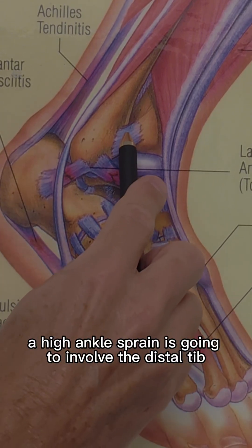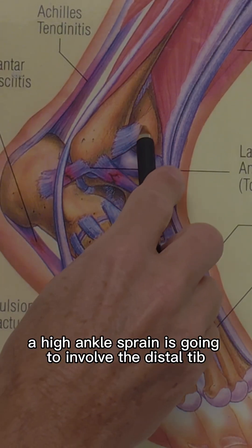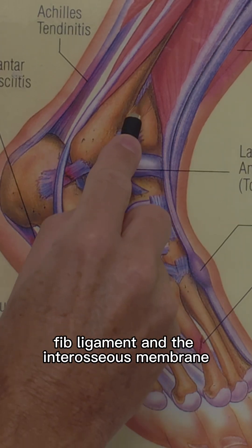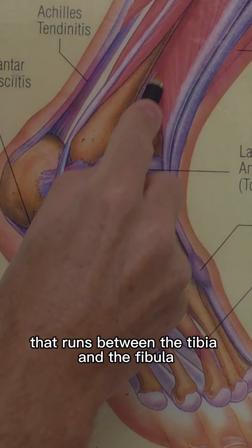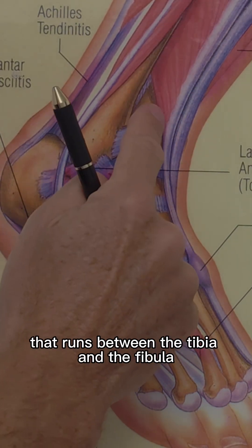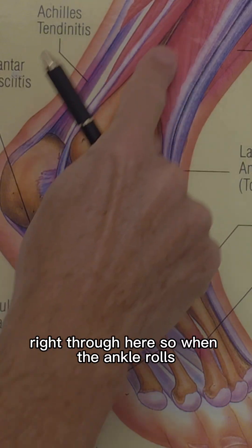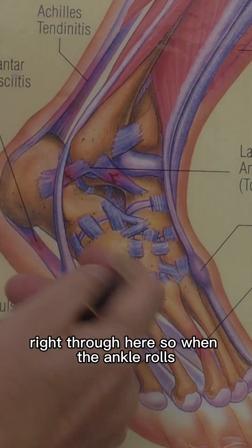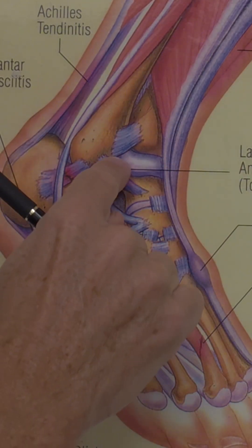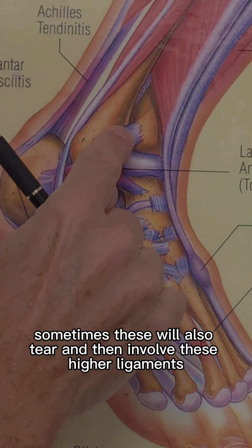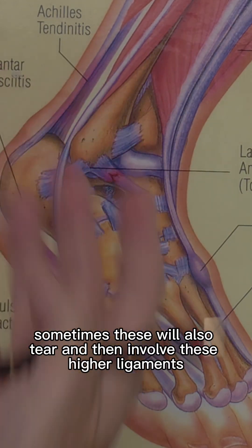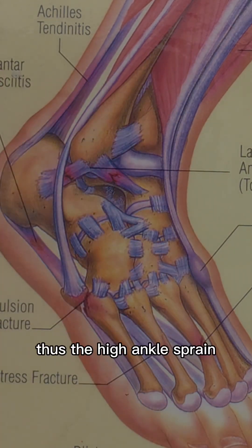A high ankle sprain is going to involve the distal tib-fib ligament and the interosseous membrane that runs between the tibia and the fibula right through here. So when the ankle rolls, sometimes these will also tear and involve these higher ligaments — thus the high ankle sprain.